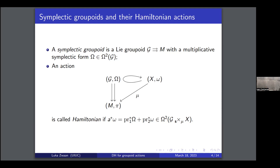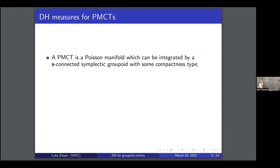That's the definition, and what we want is a Duistermaat-Heckman measure in this context. Let's talk a bit about the situation for PMCTs — Poisson manifolds of compact type. This is a Poisson manifold with a compactness property in the sense that the global object associated to it has compactness type. Specifically, you want it to be integrated by a source-connected symplectic groupoid with certain compactness properties.